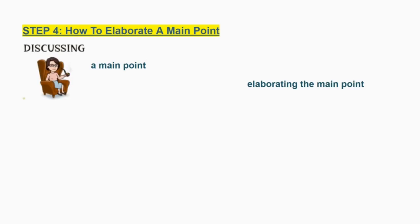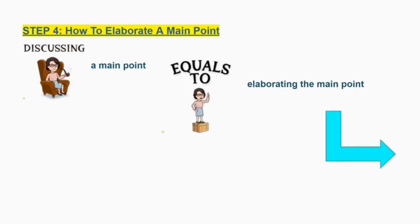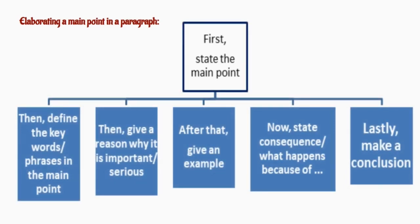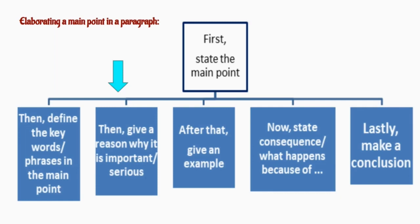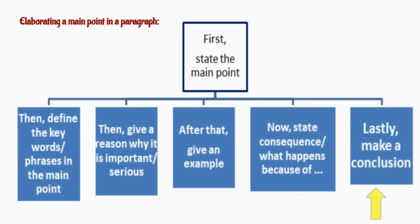Step 4: how to elaborate a main point. In this lesson, students will try to construct six sentences in a paragraph when elaborating a main point. The first sentence states the main point — what is it about? Sentence 2 defines the keywords or phrases in the main point. Sentence 3 gives a reason why what was mentioned is important or serious. Sentence 4 gives an example. Sentence 5 states the consequence. And lastly, sentence 6 makes a conclusion.